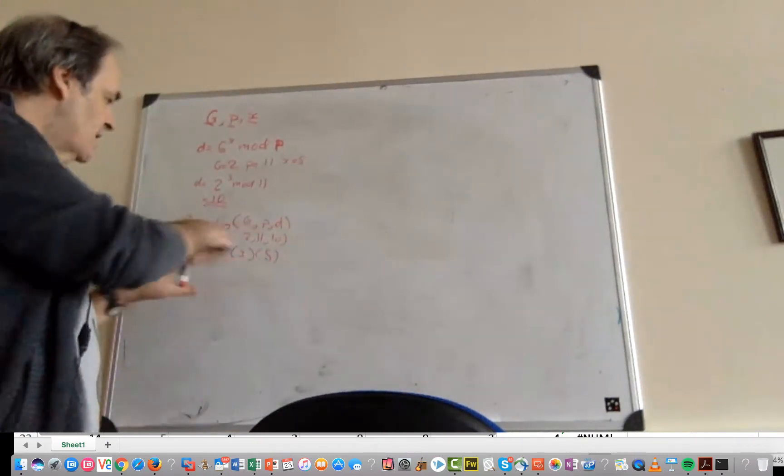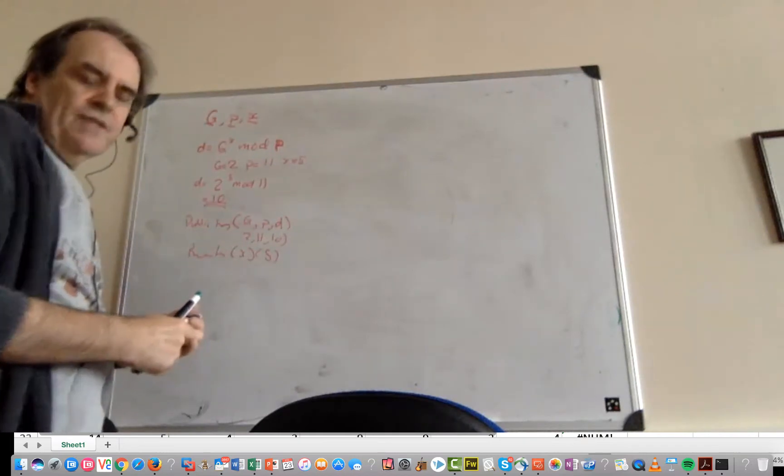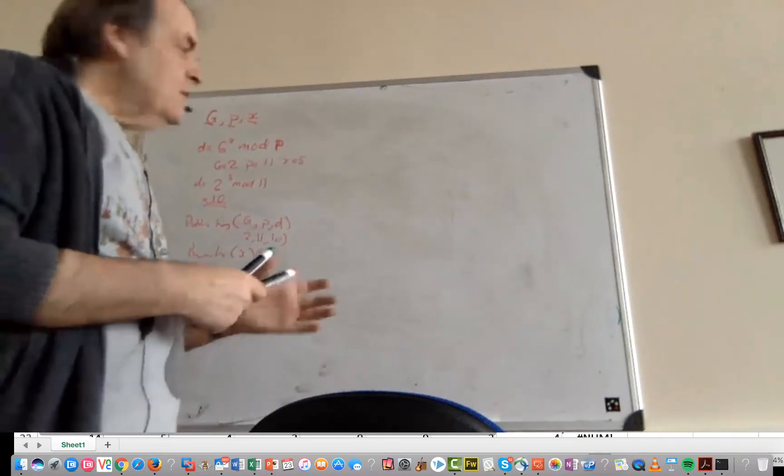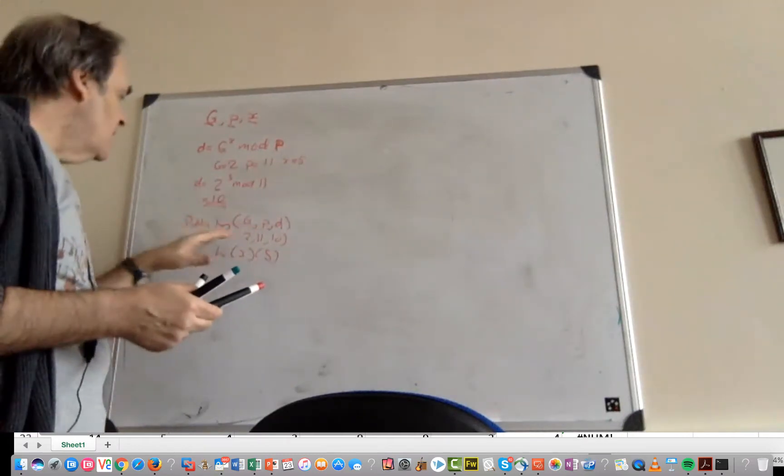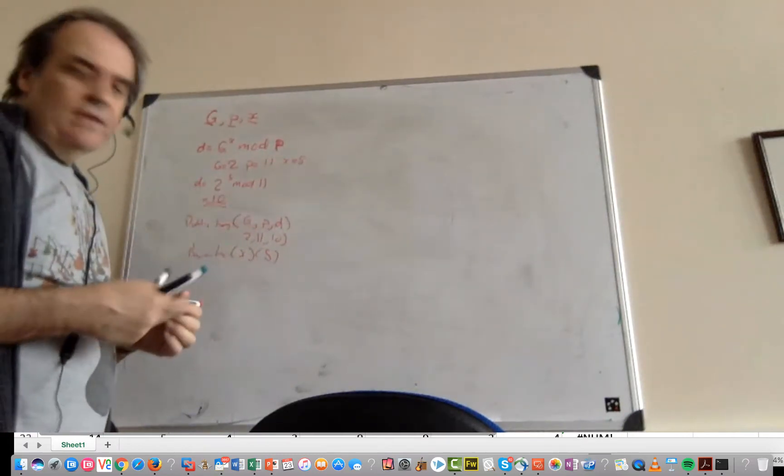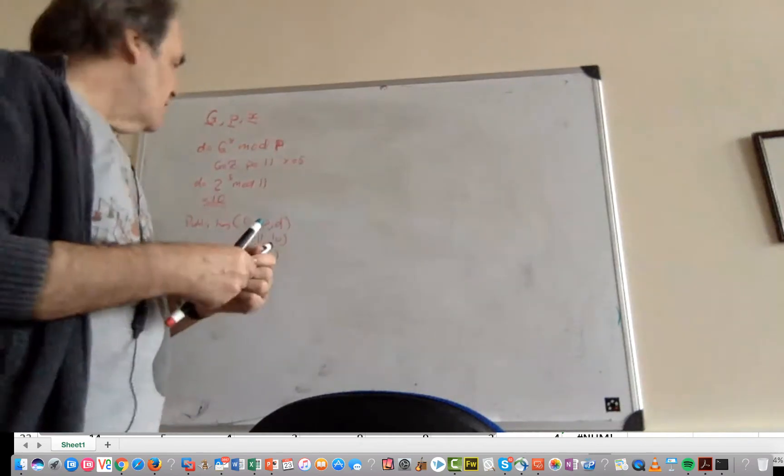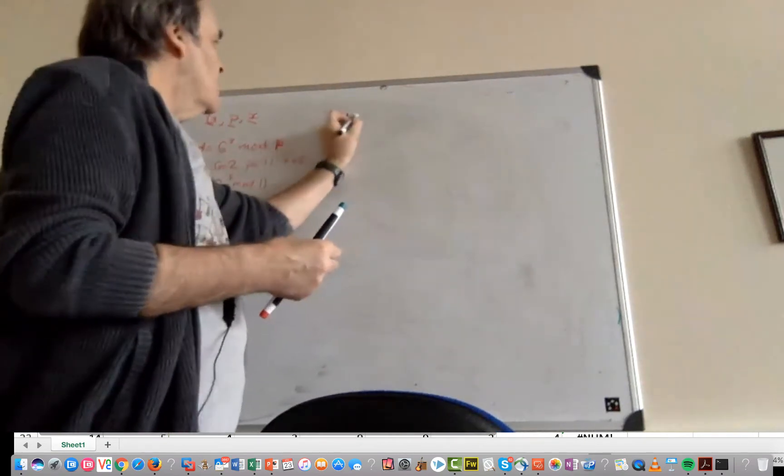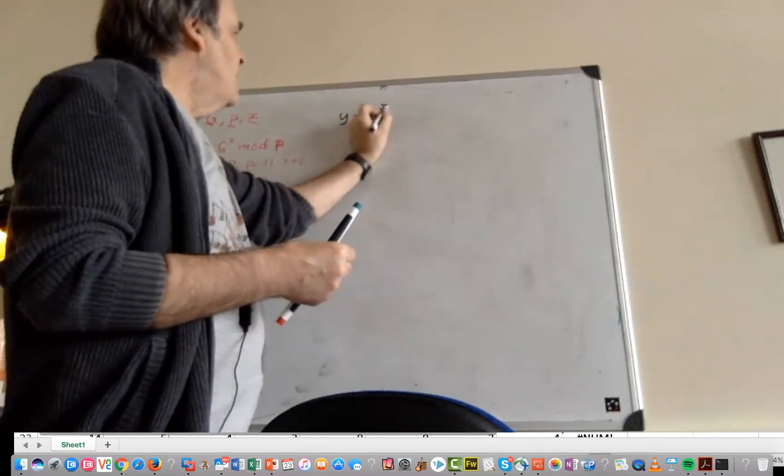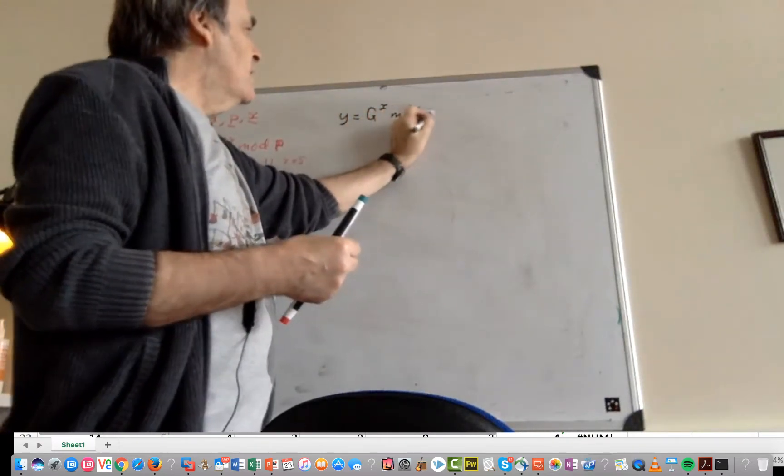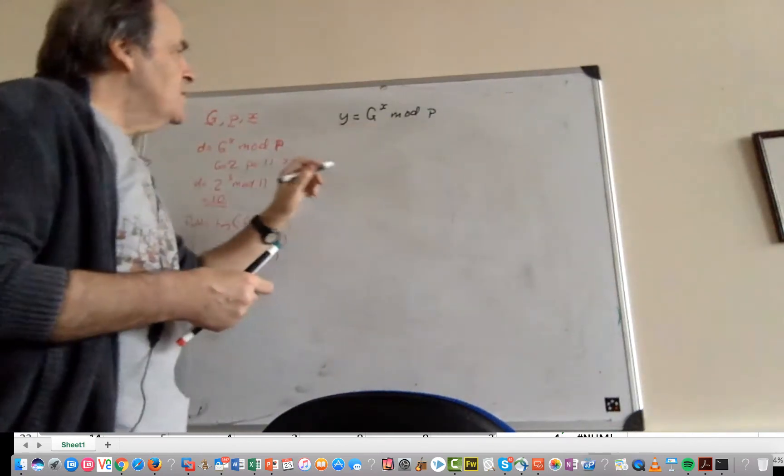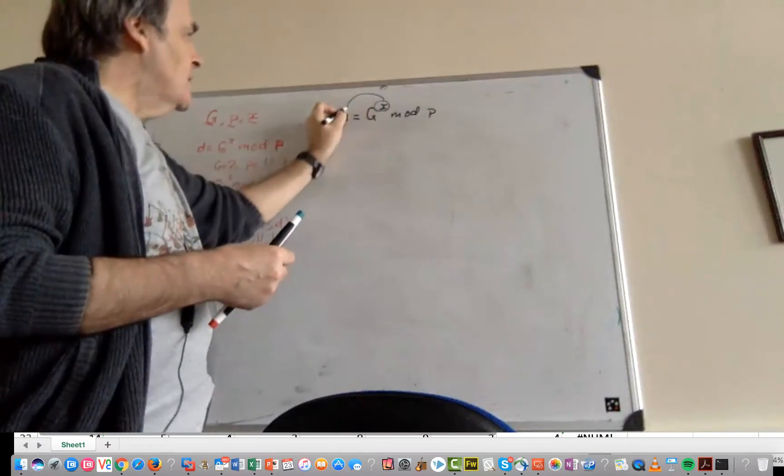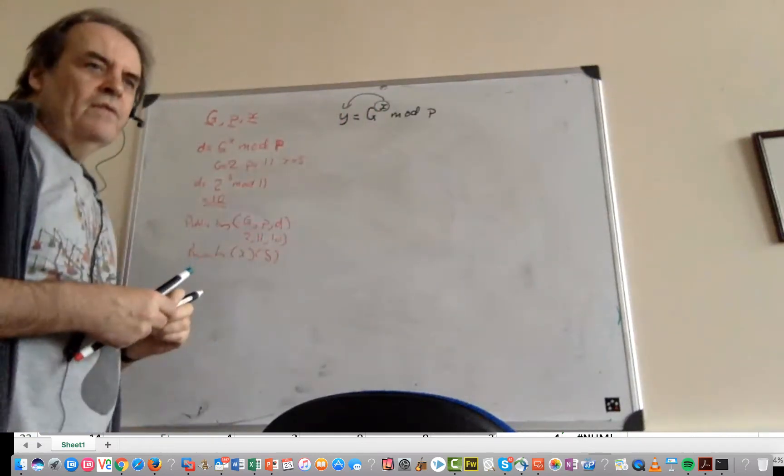We have a public key with three values and a private key which is a single value. I'm going to explain in the simplest way possible the values we can select for G. With discrete logarithms, we need to make sure that for every value of X we get a unique value of Y.